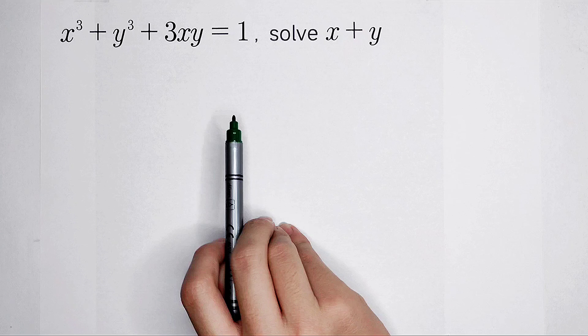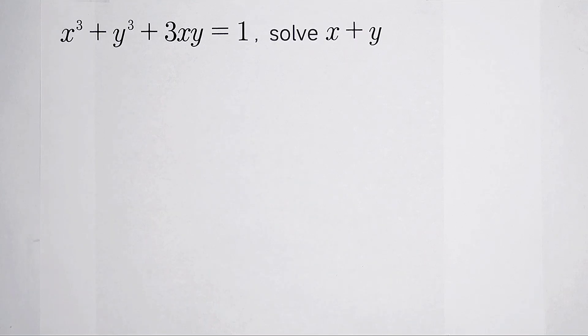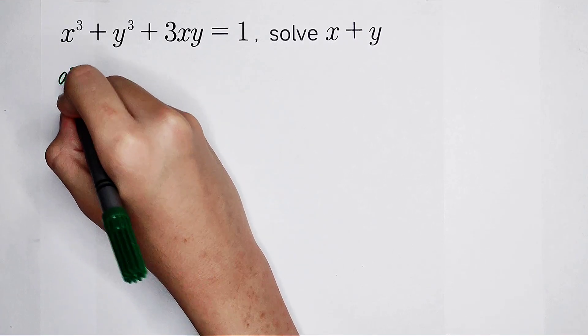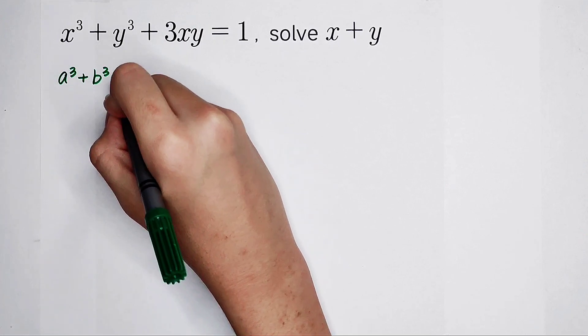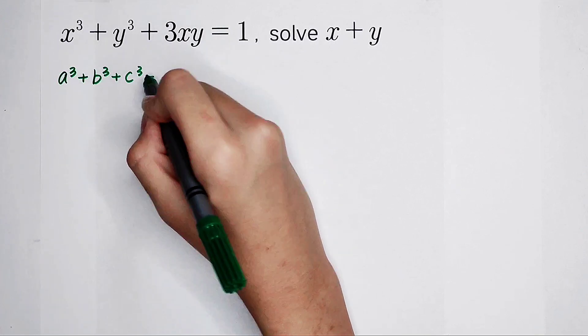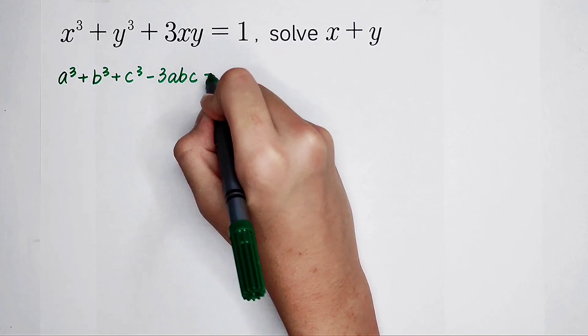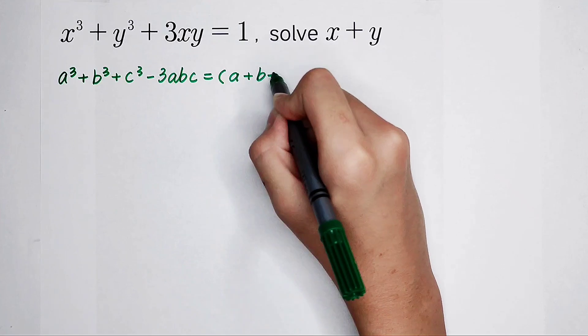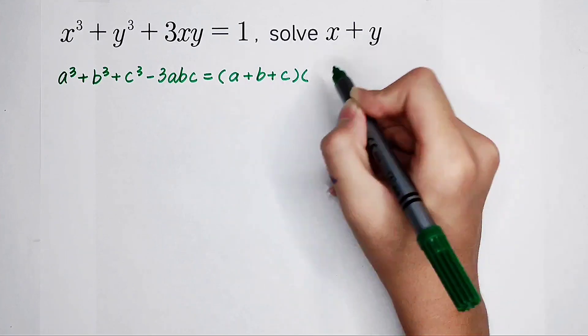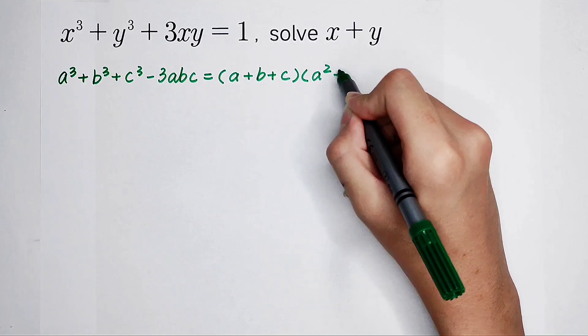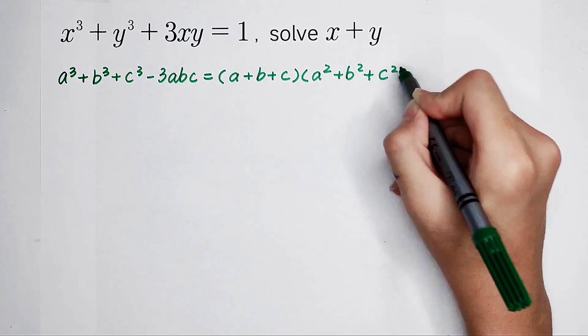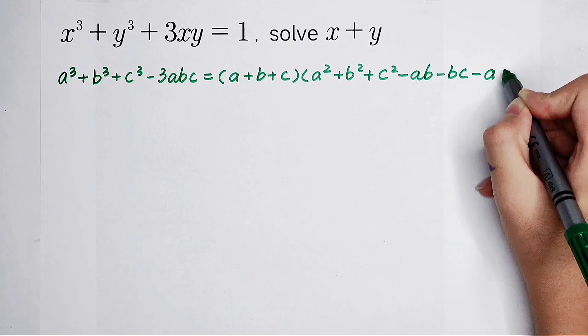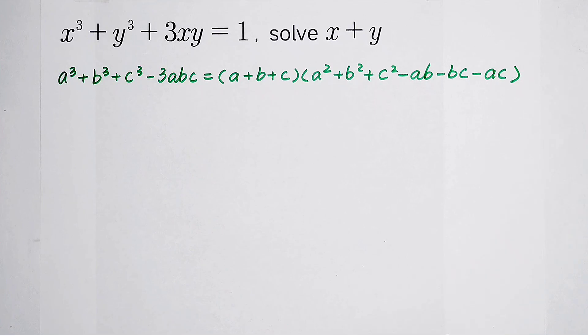For dealing with this question, you have to remember this formula. It says, a cubed plus b cubed plus c cubed minus 3abc is equal to (a plus b plus c) times (a squared plus b squared plus c squared minus ab minus bc minus ac). It's beautiful, isn't it?